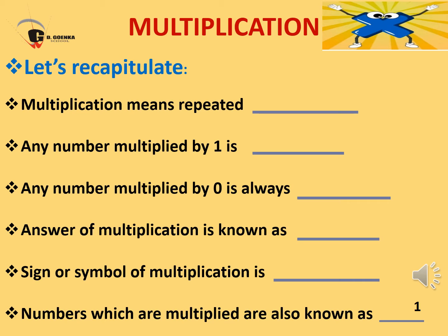For example, 4 multiplied by 0 is 0, and 40 multiplied by 0 is also 0. The answer of multiplication is also known as product. The sign or symbol of multiplication is cross. The numbers which are multiplied are also known as factors. The number which we multiply is known as multiplicand, and the number by which we multiply the multiplicand is known as multiplier. But both the multiplicand and multiplier are also known as factors.